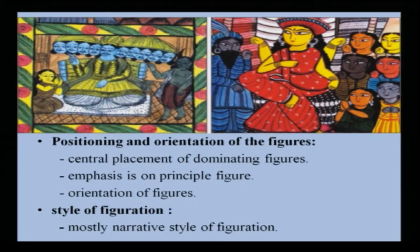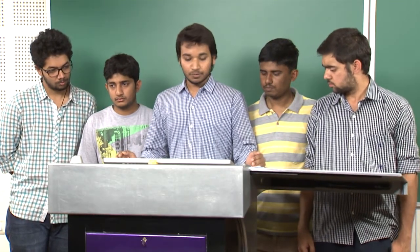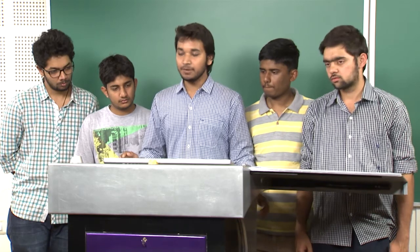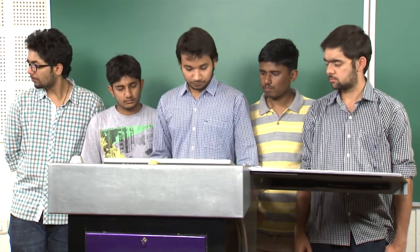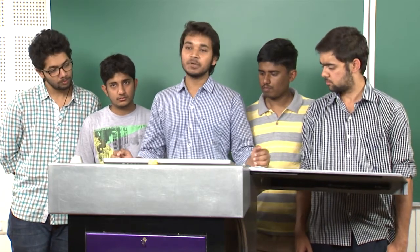Bengal Potha Chitra emphasizes only principal figures while the background is not given much detail. The orientation of figures depends on the event in the scroll, but mostly a side profile view is shown to give maximum detail and generate a sense of movement. Due to its vast influence of time periods, cultures, and religions, it cannot be fit into a single style of figuration, but it mostly uses a narrative style.